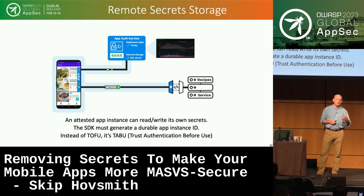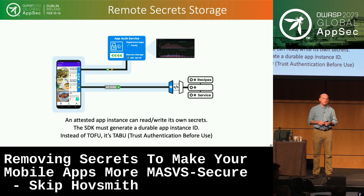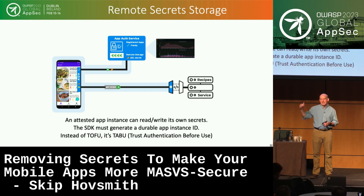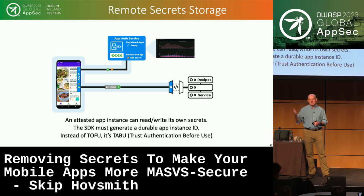Remote secret storage is another possibility. If you generate a unique durable ID for each installed instance, you can use that to identify individual instances and establish reading and writing of secrets — not to secure storage on the device, but up into the app auth service. So you have cloud-based storage of secrets. If you've established trust via attestation and have a valid app auth token, you can read and write these secrets.